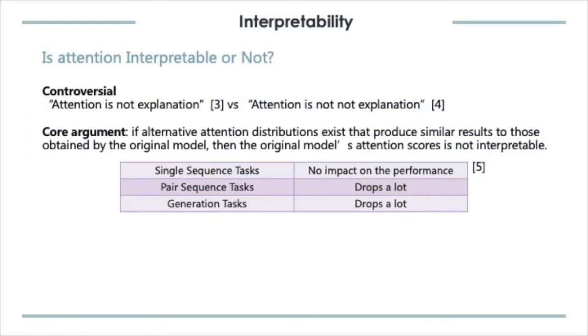Is attention interpretable? This is a controversial topic. There are two contradictory papers regarding this argument, which are attention is not explanation versus attention is not not explanation. The core argument is that, for a well-trained model, if alternative attention distributions exist so that similar results obtained by the original model can be achieved, then the original model's attention score is not interpretable.